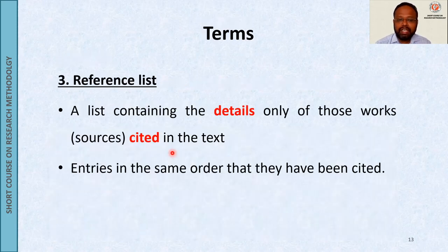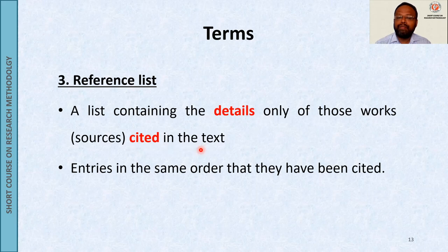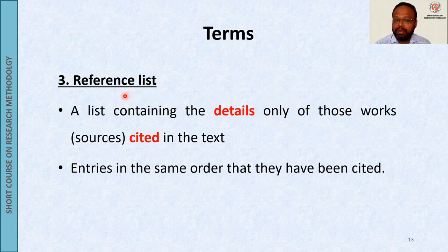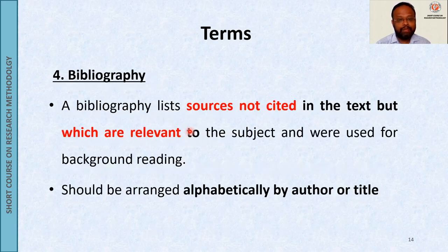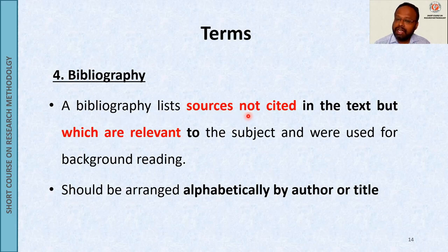The reference list is the list containing the details only of those works which are cited in the text, in the same order that they have been cited. What does bibliography mean? A bibliography lists sources which are not cited in the text but are relevant to your subject and were used for background reading.